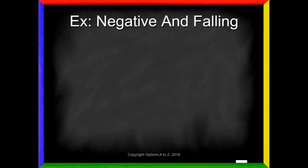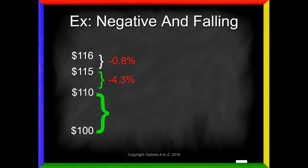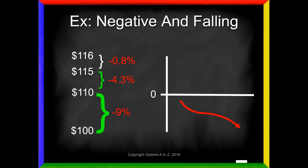Now let's say prices are negative and falling. Maybe our stock goes from 116 to 115 — a drop of less than 1%. Then 14 days later it drops to 110, a drop of five points, about 4.3%. Then 14 days later it drops to 100 — a $10 change, about a 9% decrease. Prices are falling from 116 toward 100, and the rate of change is getting bigger. So the line is below zero, and it's heading further south — the momentum to the downside is increasing.